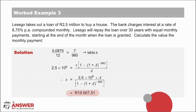Let's go through the steps to clarify your understanding. First, use the memory for the monthly interest rate. Because it is 30 years, the number of monthly payments is 360. The present value of the loan is R2.5 million — use 10 to the power 6 to avoid typing the wrong number of zeros. Because we need to solve for X, we make it the subject by multiplying the R2.5 million by the bracket and dividing by the denominator bracket. Our answer for X is R19,667.51. A sobering thought: for Le Sego to buy a house worth R2.5 million, she needs to pay close to R20,000 every month for 30 years.